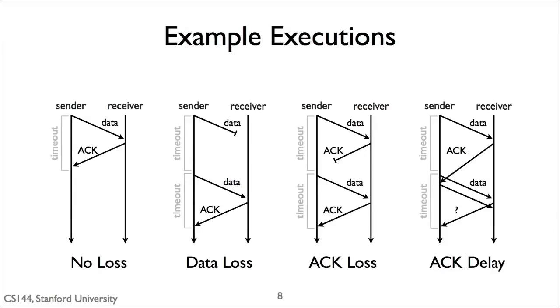So that's the basic stop and wait algorithm. Here are four sample executions. The first is when there's no loss. Everything works perfectly. The sender sends its data, the receiver receives it, sends an acknowledgement, and now the sender, if it had more data, could send more.